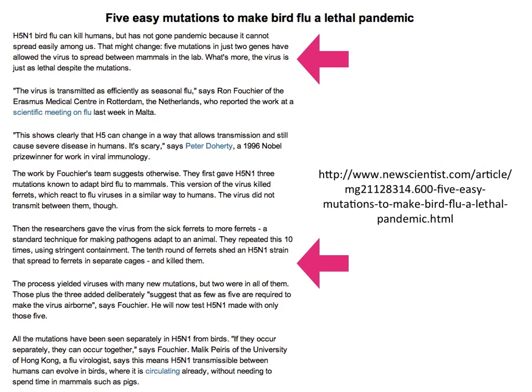A Nobel laureate Peter Doherty was quoted saying this shows H5 can change to allow transmission and still cause severe disease in humans — without any human experiments having been done. That's a problem when scientists talk to the press. Here is what happened: they passed virus 10 times from ferret to ferret; the 10th passage shed an H5N1 strain that spread to ferrets in separate cages and killed them. Then he picked out the mutations — five are required for the virus to be airborne. But the paper hasn't been published yet.